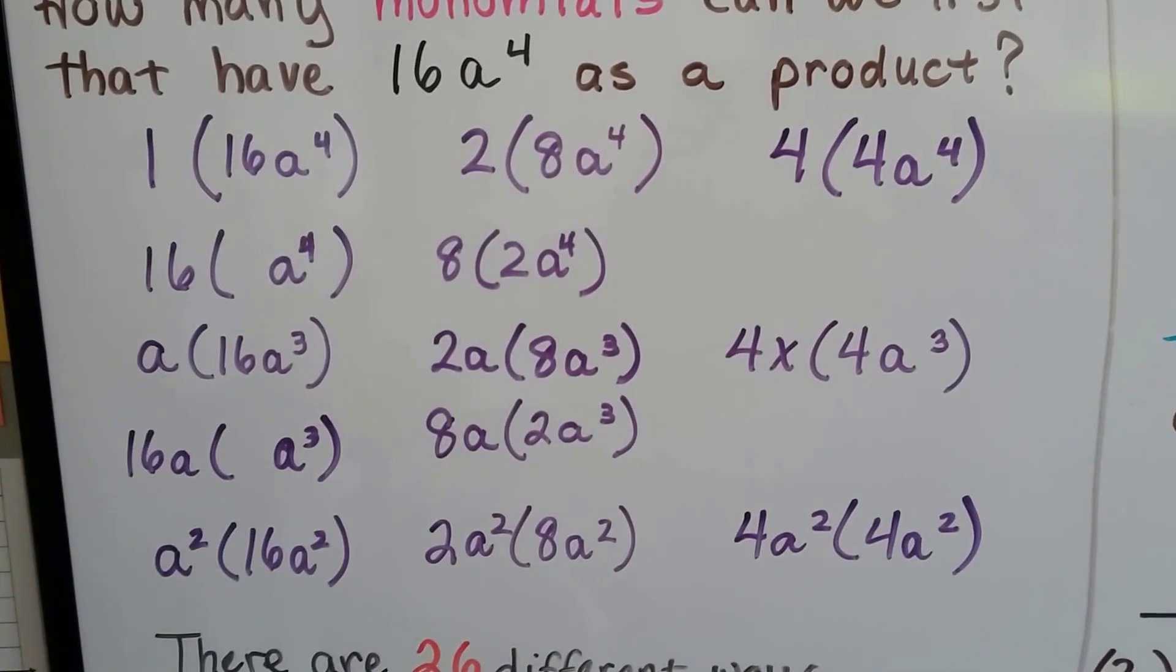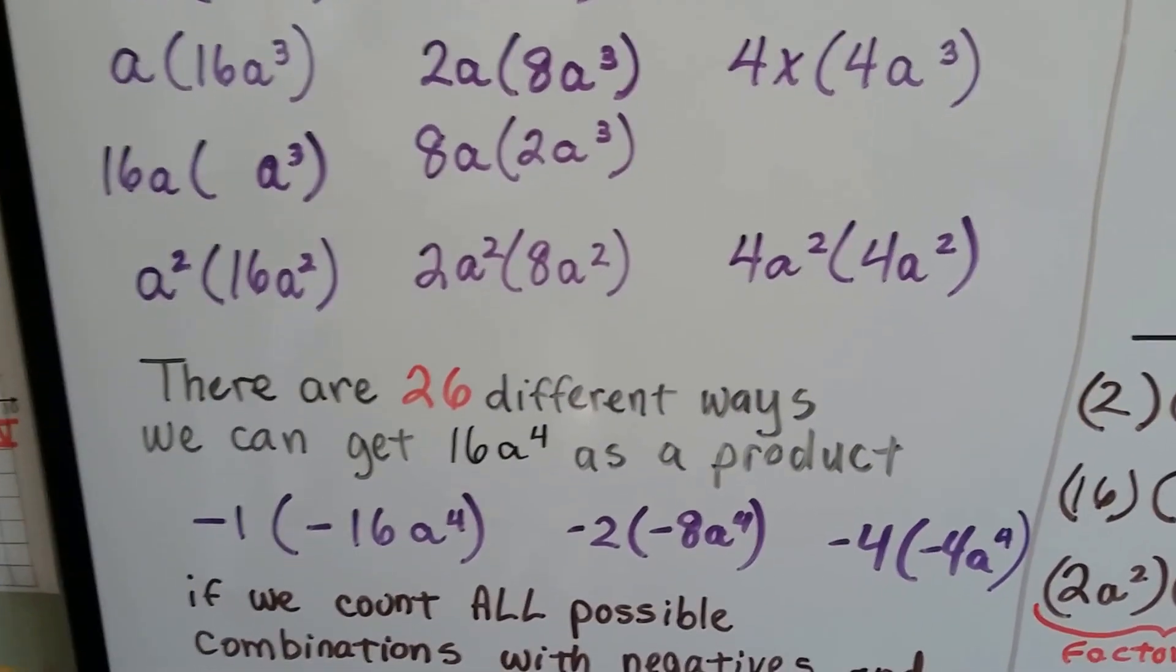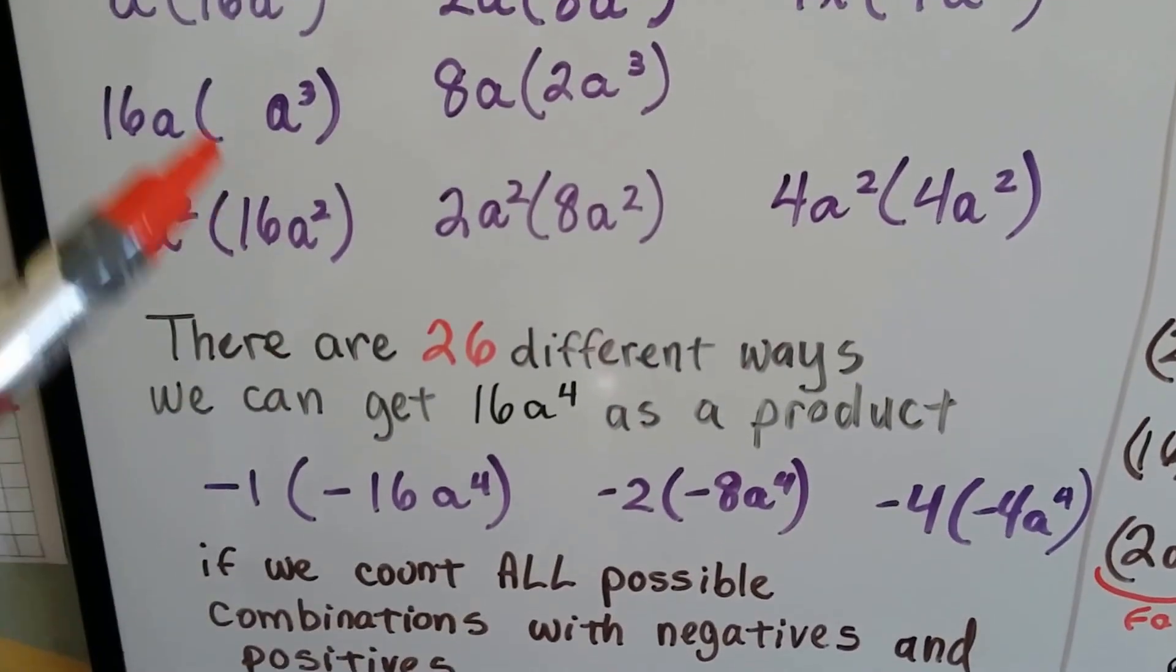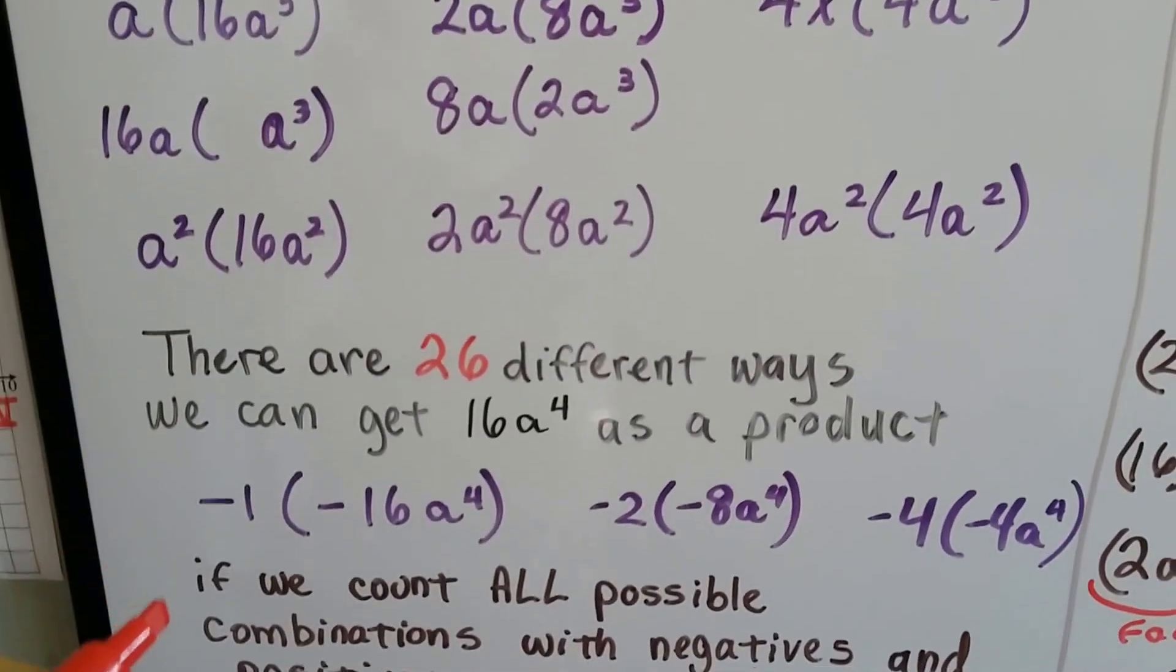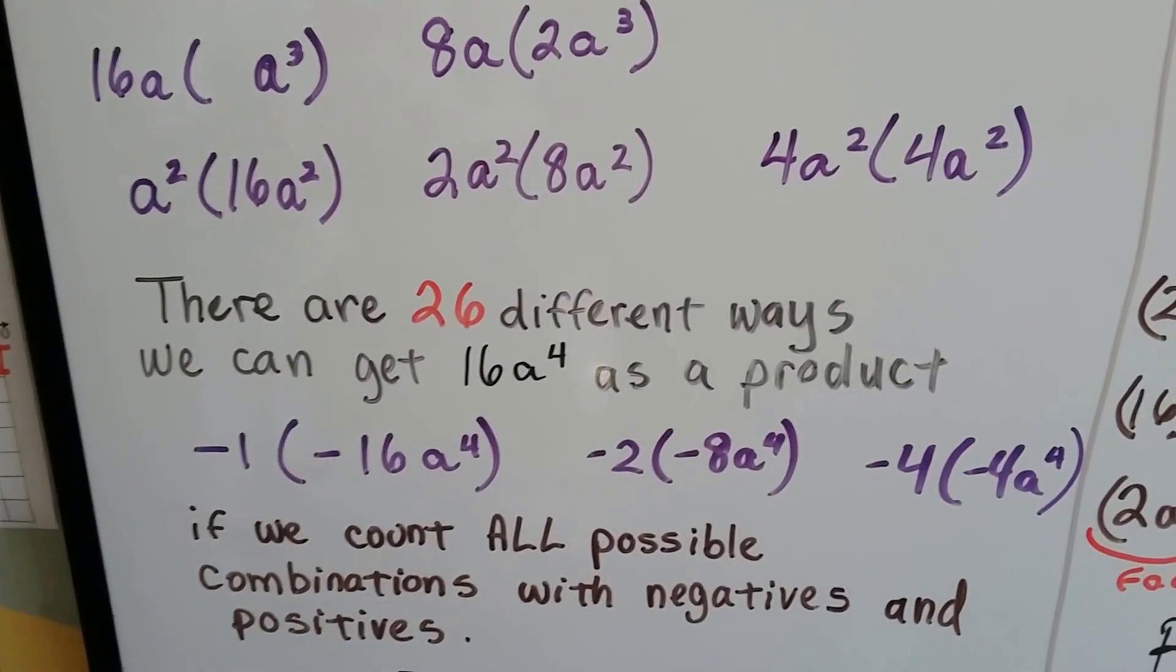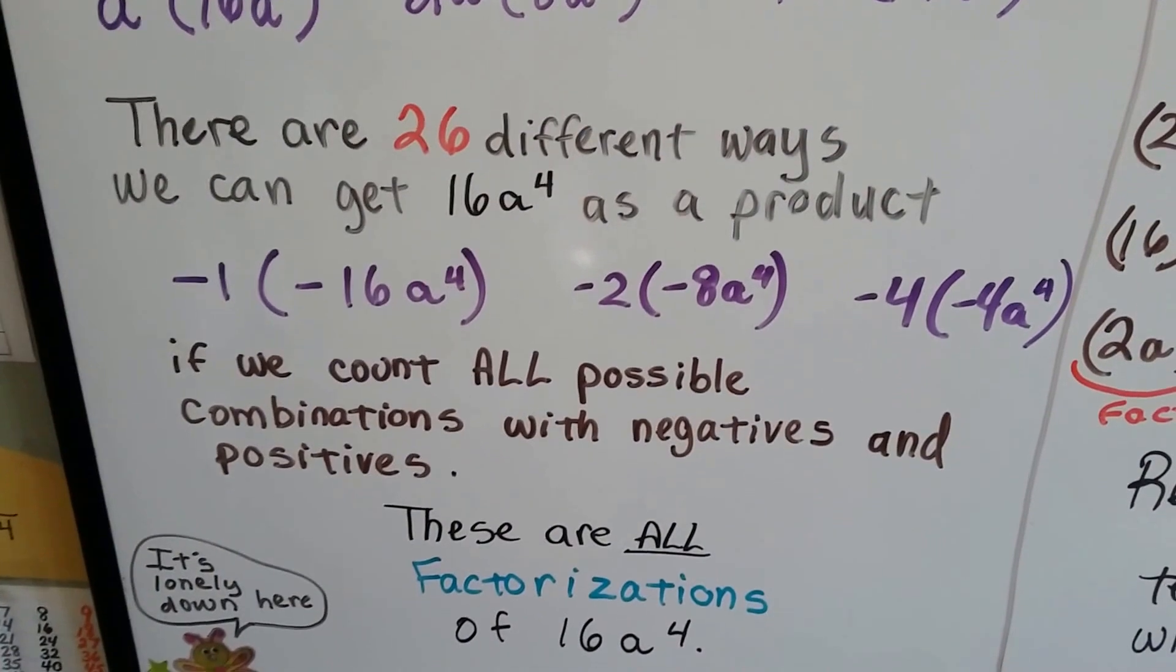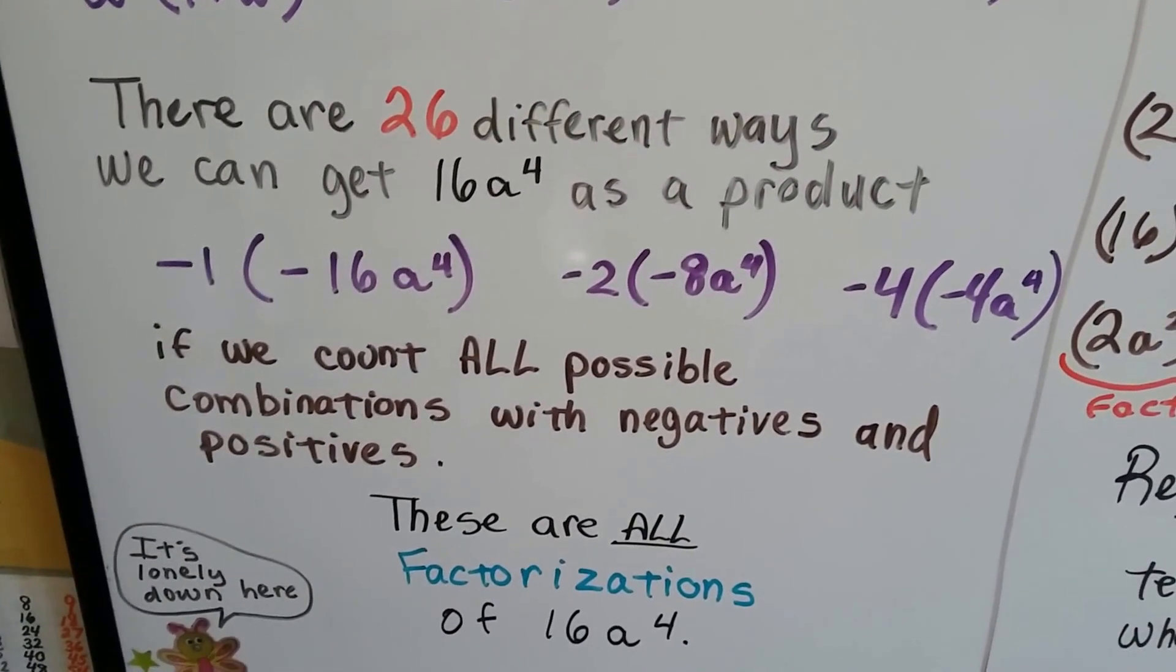Well, actually, there are 26 different ways that we can get 16a to the 4th power as a product. With all these positive numbers and terms, we could do negatives and get a positive 16a to the 4th power. If we count all the possible combinations with negatives and positives, there's going to be 26 different ways.